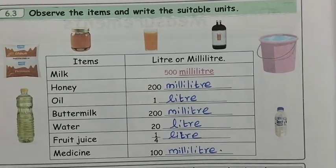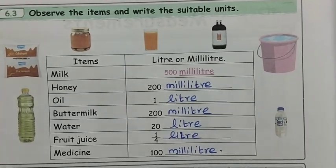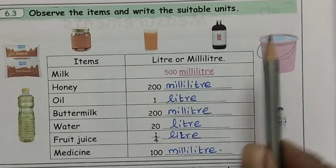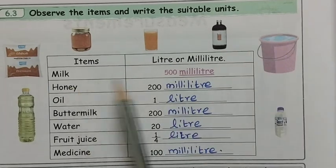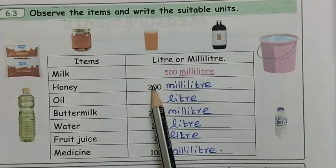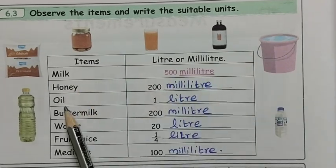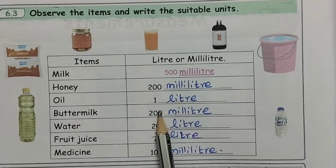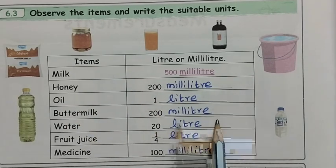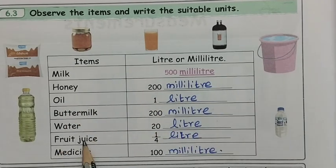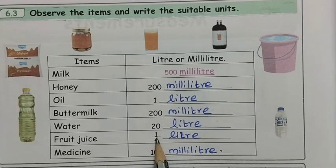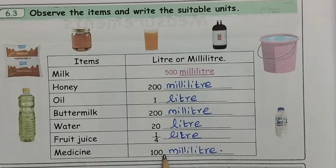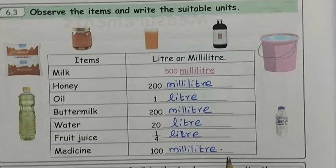Observe the items and write the suitable units. Milk: 500 ml. Honey: 200 ml. Oil: 1 liter. Buttermilk: 200 ml. Water: 20 liters. Fruit juice: quarter liter. Medicine: 100 ml.